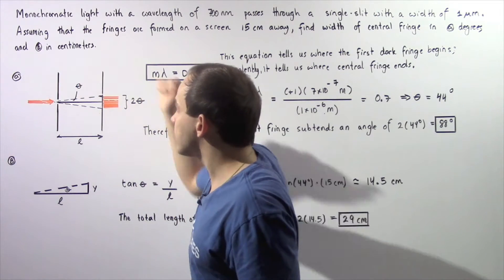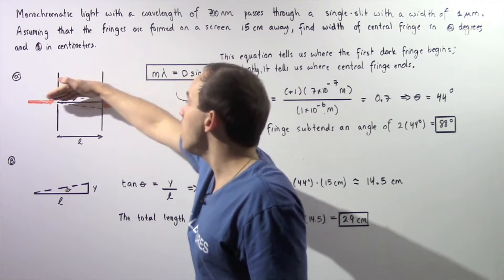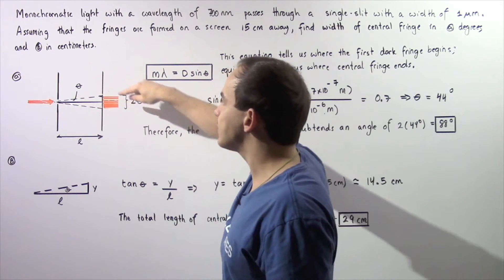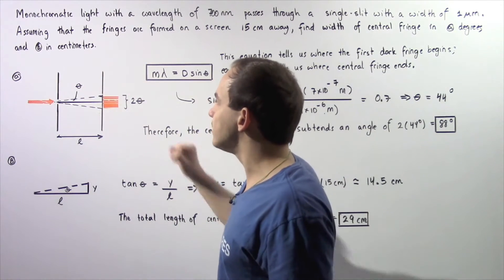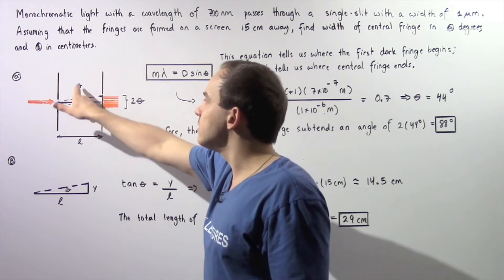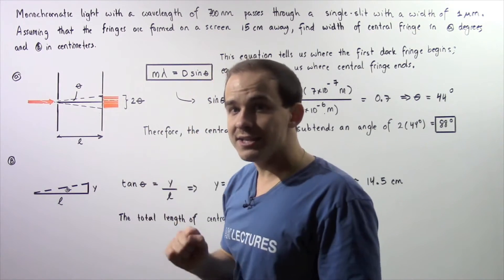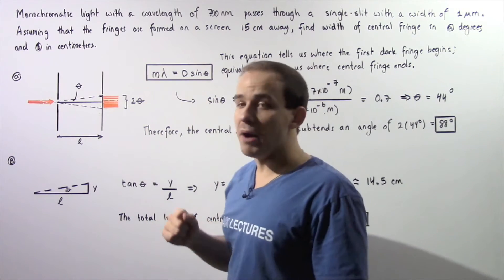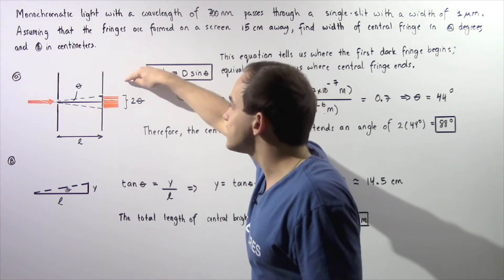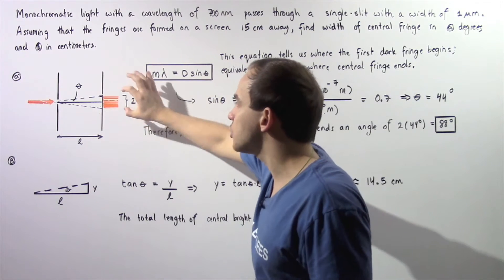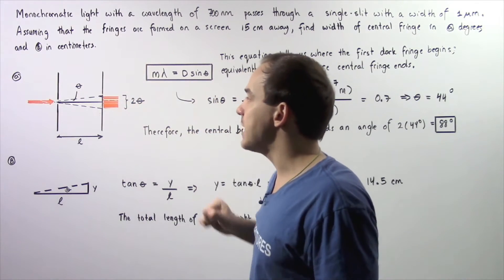Now this angle theta is the angle that this upper ray makes with respect to our horizontal and notice this angle is also theta. So if we calculate what this angle theta is and then multiply that by 2, that will give us the total angle measure that this fringe takes up.